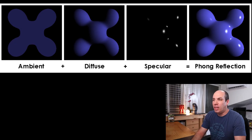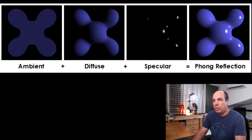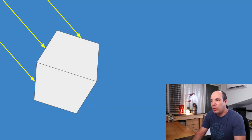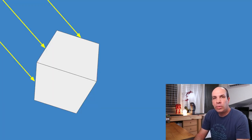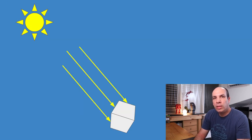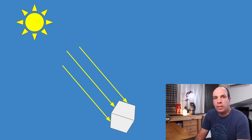Today we're doing point lighting. In the last three videos we covered the Phong Reflection model and to do that we used the directional light. This light source is characterized by having only a direction and no position and we usually use it for stuff like the sun or the moon.